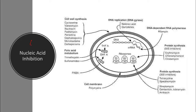Now the fourth type: nucleic acid inhibitors. We've talked about cell wall inhibitors, protein synthesis 50S and 30S inhibitors, and cell membrane inhibitors. Nucleic acid inhibitors are those antibiotics which are going to destroy the DNA — for example, quinolones and nalidixic acid.